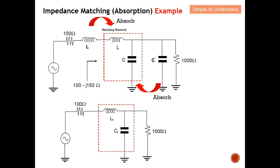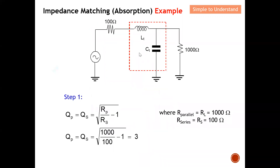Step 1: Calculate the Q value. The formula uses parallel Q and series Q. Remember, the parallel resistor is always the larger resistor value compared to the series. Here, the parallel resistor is 1000 ohm and the series resistor is 100 ohm. From this, I calculate my Q value as 3.